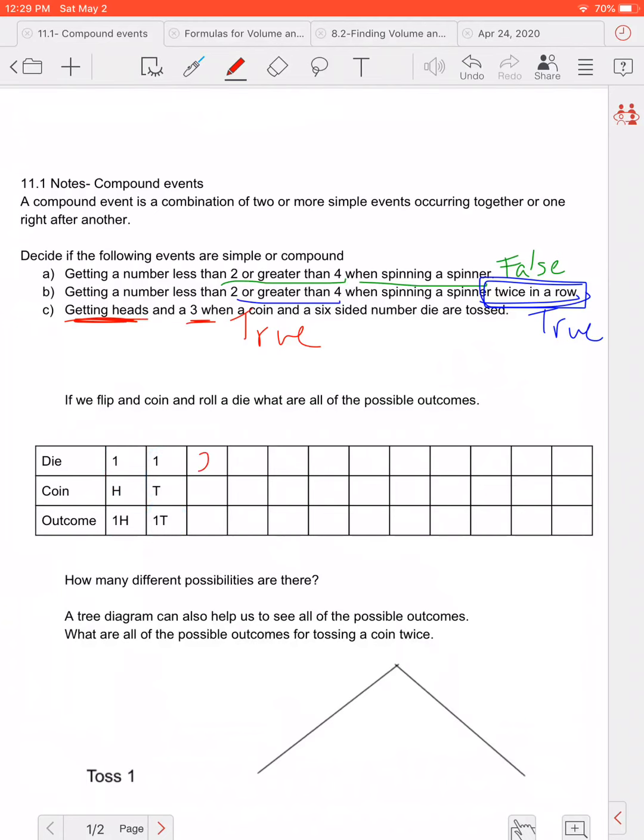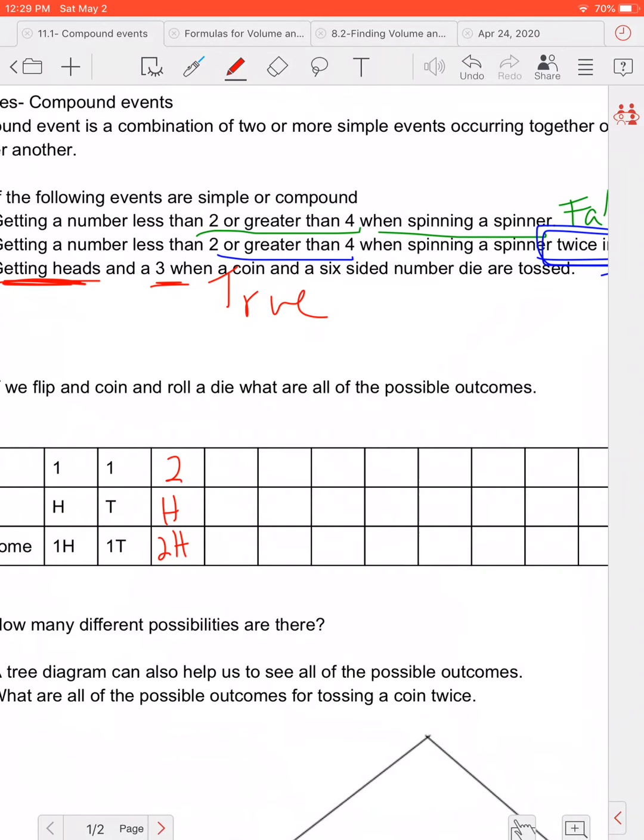Now I could roll a two with heads which I could call a two H. I could roll a two with tails and call that two T. I could roll a three with heads and a three with tails and call that three H and three T. Again feel free to pause this video anytime to keep writing with me. We could have a four with heads and a four with tails and we'll call that four H and four T.